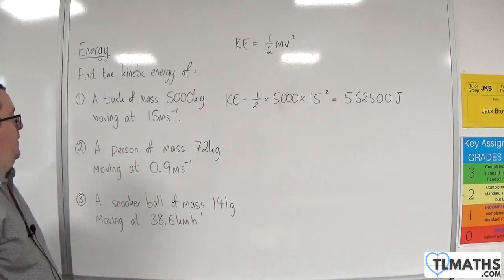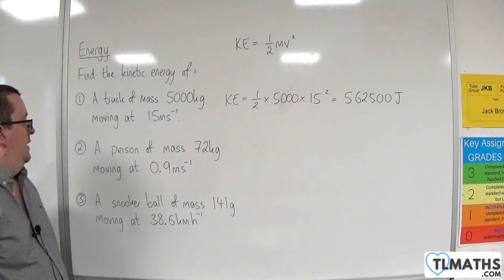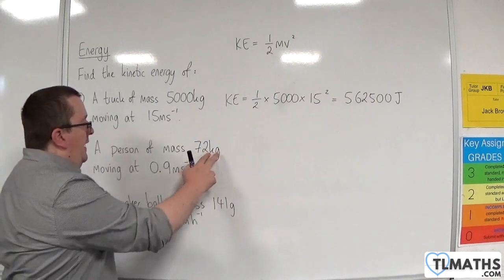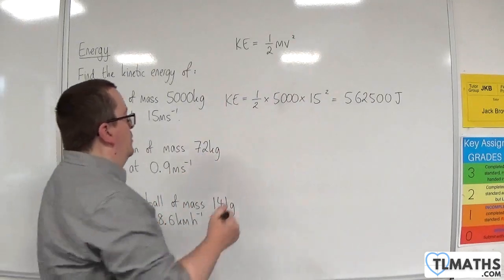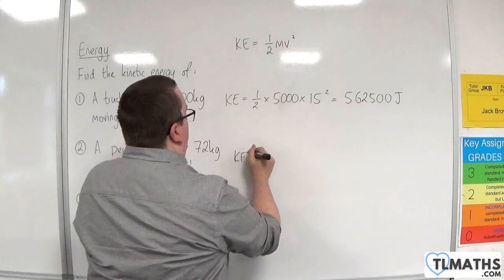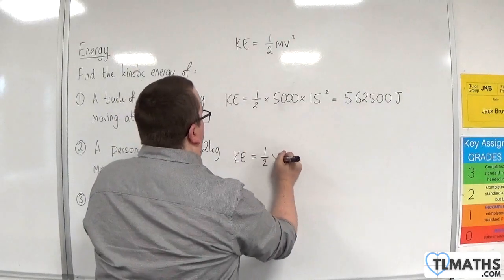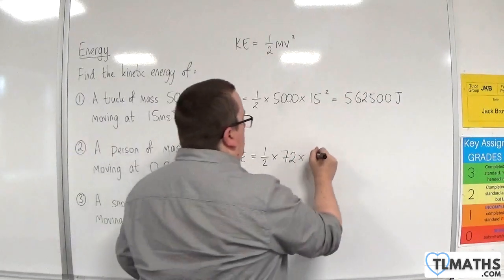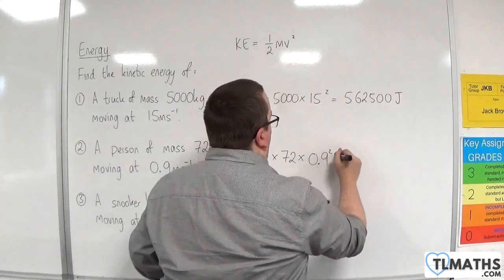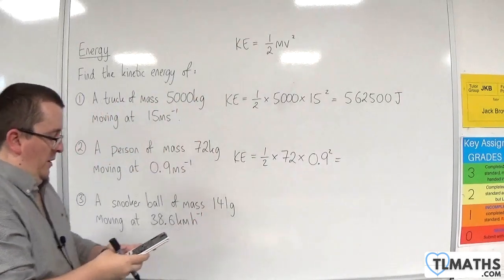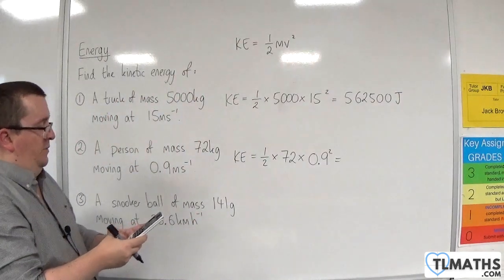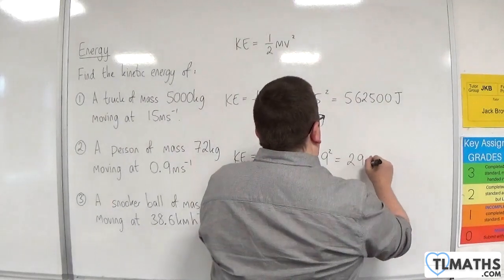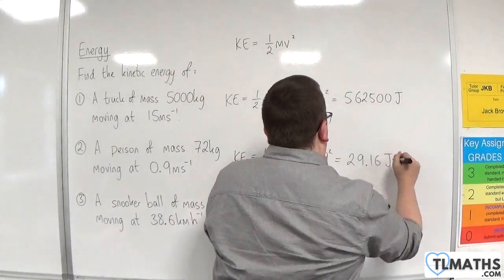For number two, a person of mass 72 kilos moving at 0.9 metres per second. Again, kilos and metres per second, so we're all good to go straight into the formula. The kinetic energy is one-half times m, which is 72, times 0.9 squared. One-half times 72 times 0.9 squared is 29.16 joules.